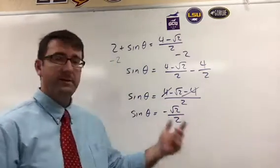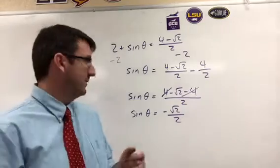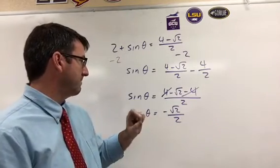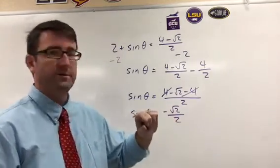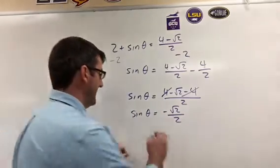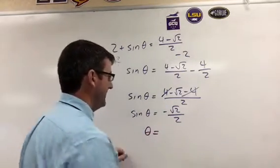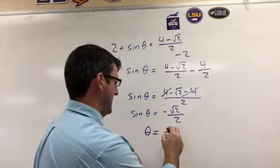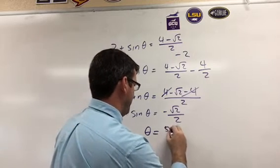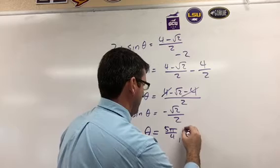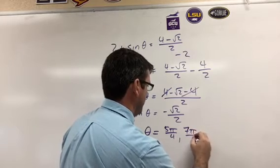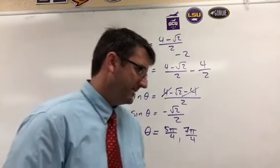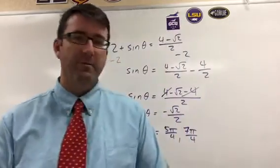Now at this point we take out our unit circle and we look at where sine is equal to negative square root of 2 over 2. And that's going to be where the angle is 5 pi over 4 and 7 pi over 4. And so that is D for number 11.